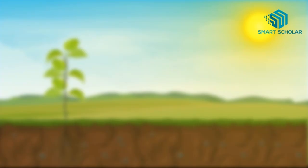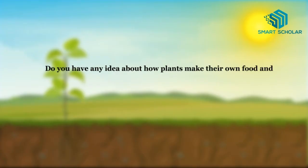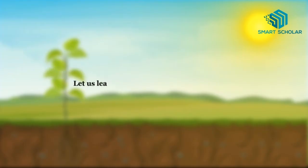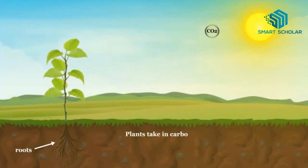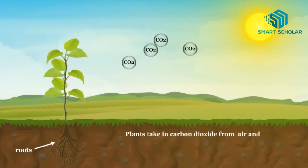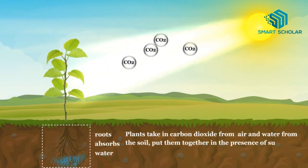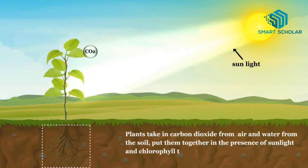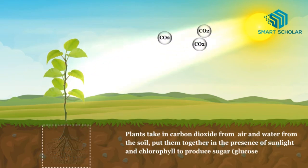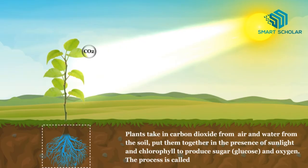Photosynthesis. Do you have any idea about how plants make their own food and produce oxygen? Let us learn about the complete process. Plants take in carbon dioxide from air and water from the soil, put them together in the presence of sunlight and chlorophyll to produce sugar and oxygen. The process is called Photosynthesis.